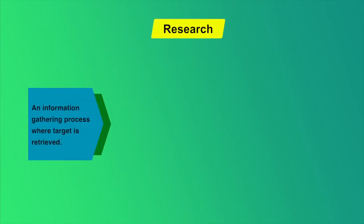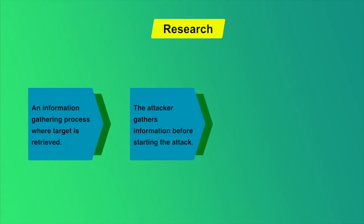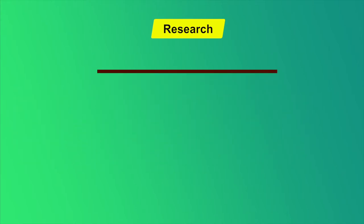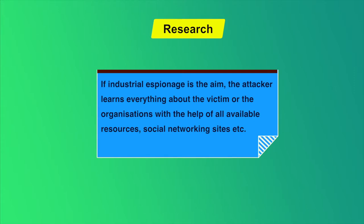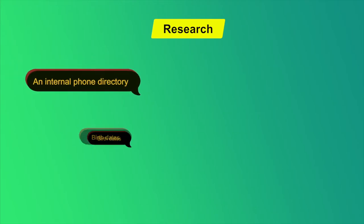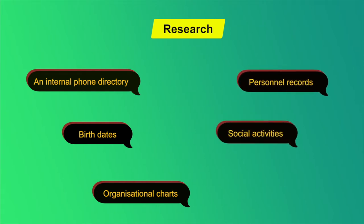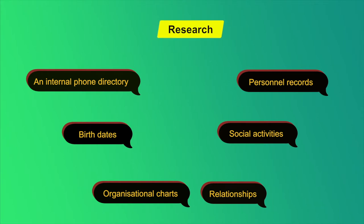The first step is Research — an information gathering process where information about the target is retrieved. The attacker gathers as much information as possible before starting the attack. Some methods are obvious and require no great cunning, while others require certain skills. If industrial espionage is the aim, the attacker learns everything about the victim or organization using all available resources, including social networking sites. Typical information gathered may include internal phone directories, birth dates, organizational charts, personal records, social activities, and relationships.